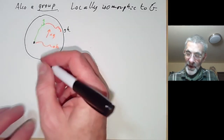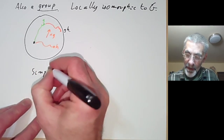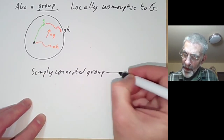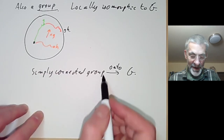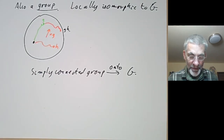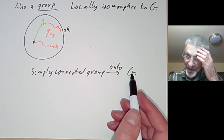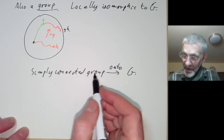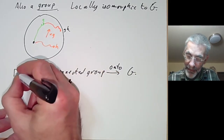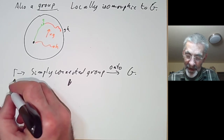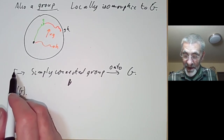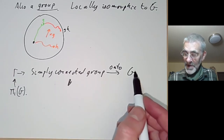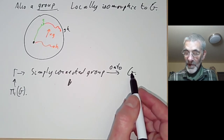So we've got a map from a simply connected group onto our group G which is a local isomorphism — so these have the same Lie algebra but this group is simply connected. Incidentally, the group we quotient out by is isomorphic to the fundamental group π₁ of the group G we started with. I mentioned earlier that a discrete normal subgroup has to be abelian, and this suggests the slightly surprising result that the fundamental group of any Lie group is always abelian.